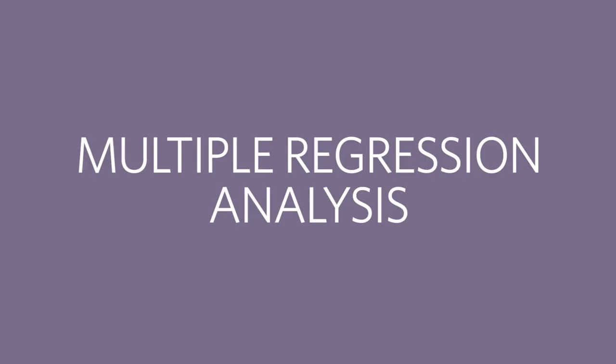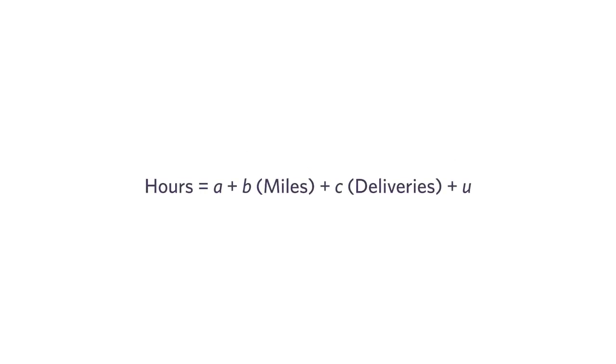A much better approach here is to use what's called a multiple regression analysis. In the multiple regression analysis, we walk into the room and say: I believe there's a relationship between hours of travel time, miles traveled, and deliveries made. And furthermore, I believe the relationship looks like this: hours is some number A, plus some other number B times miles, plus some other number C times deliveries, plus noise.